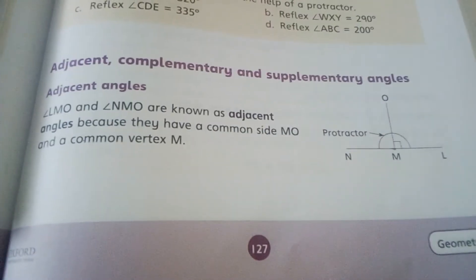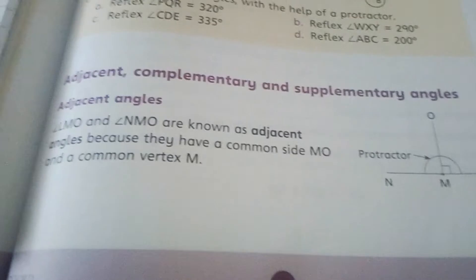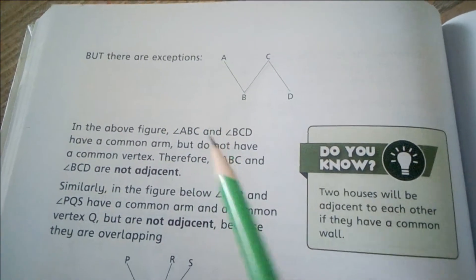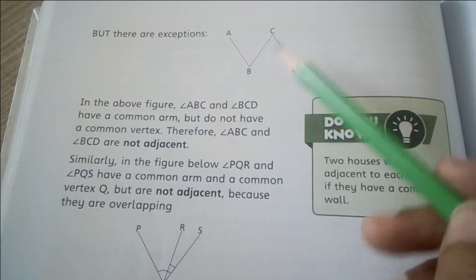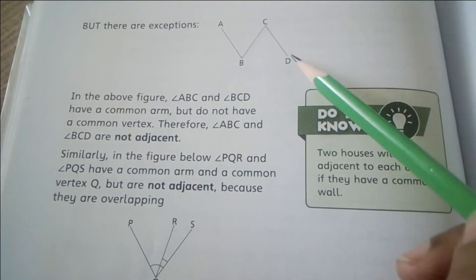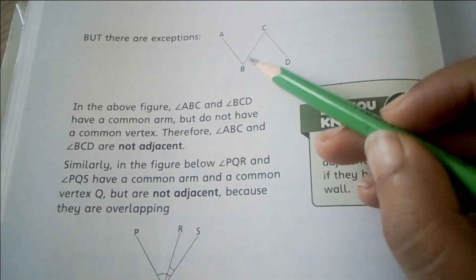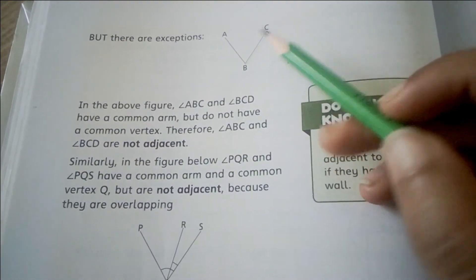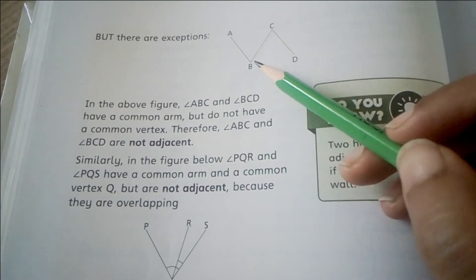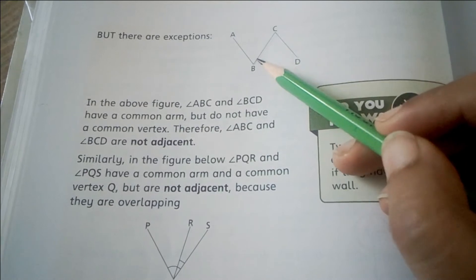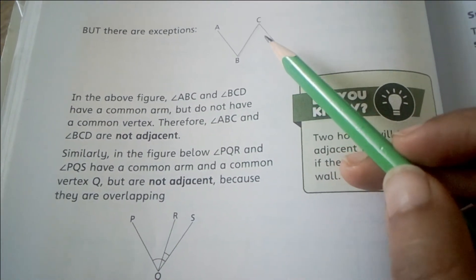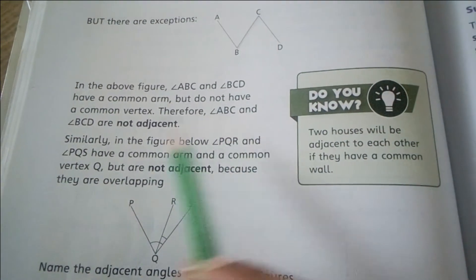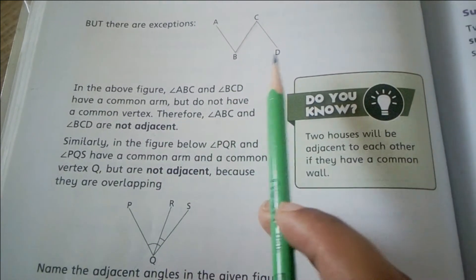Now on page 128, I will discuss cases in which two angles are not adjacent angles. Here are two angles: angle ABC and angle BCD. In these two angles, BC is a common arm, but these two angles do not have a common vertex. So in this case, angle ABC and angle BCD are not adjacent angles.